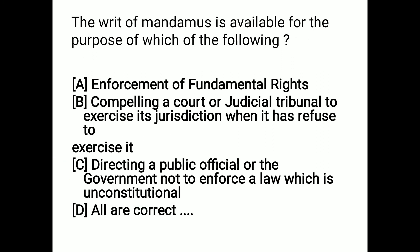The next question: the writ of mandamus is available for the purpose of which of the following? Mandamus is available for: enforcement of fundamental rights, compelling a court or tribunal to exercise jurisdiction when it has refused, and directing public officials not to enforce an unconstitutional law. Mandamus is available for all these purposes. Option D is the correct answer.